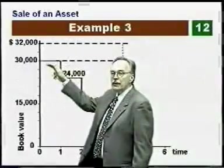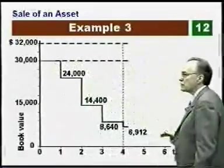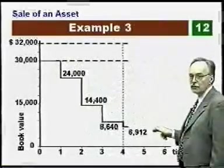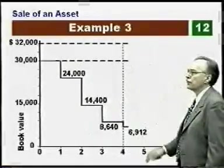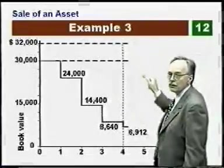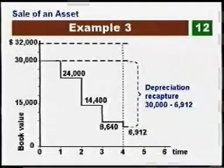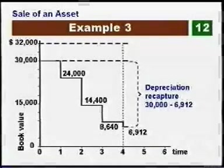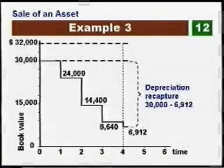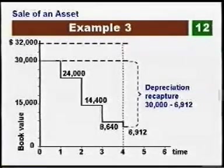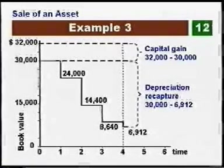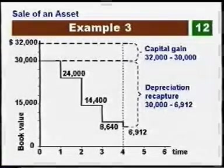We bought the asset for $30,000, applied the depreciation, and the resulting book value is $6,912 — recognizing we only take half a year's depreciation in year four. We're selling for $32,000. The difference between the selling price and the book value consists of two types of gains: the first is depreciation recapture — the amount of depreciation taken that in retrospect was too much — equal to the difference between the original installed cost and the final book value at time of sale. The second portion, above the original installed cost, the $32,000 minus $30,000, is called the capital gain.